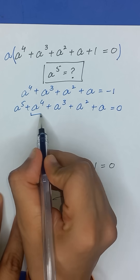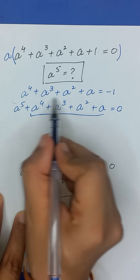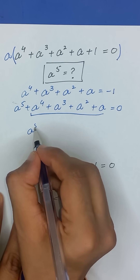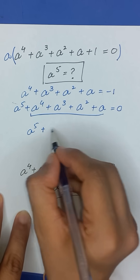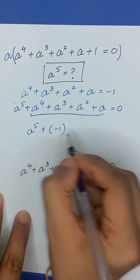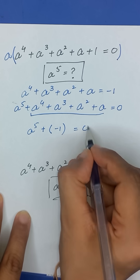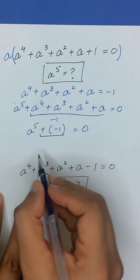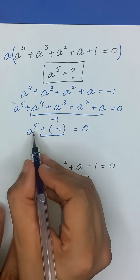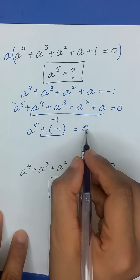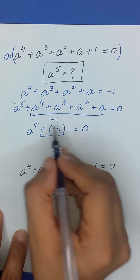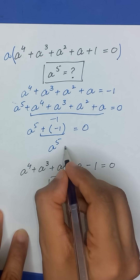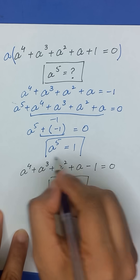Now, this part is equal to minus 1. So it will become a to the power 5 plus minus 1 is equal to 0, which means a to the power 5 minus 1 is equal to 0. We will take this negative 1 to the right hand side. So the value of a to the power 5 will be equal to 1.